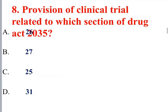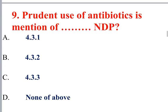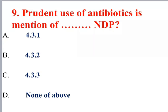The provision of clinical trial is related to Section 25 of Drug Act 2035. Section 27 covers power to ban, Section 26 covers price of medicine. Rational use of antibiotics is mentioned in Section 4.33 of the National Drug Policy.